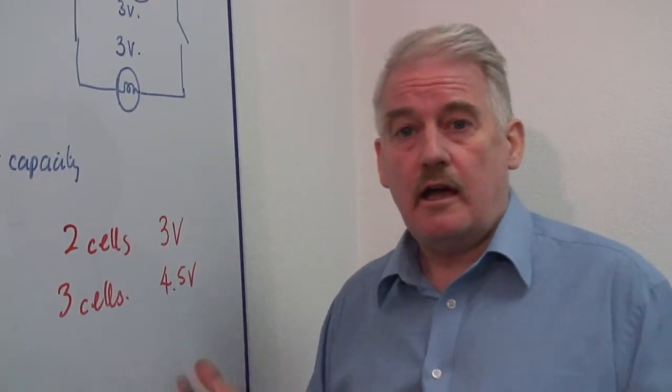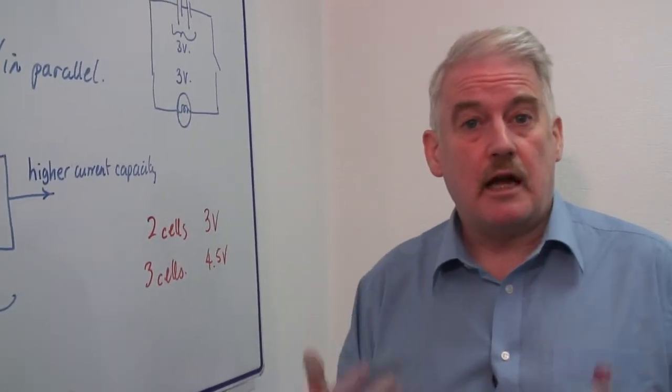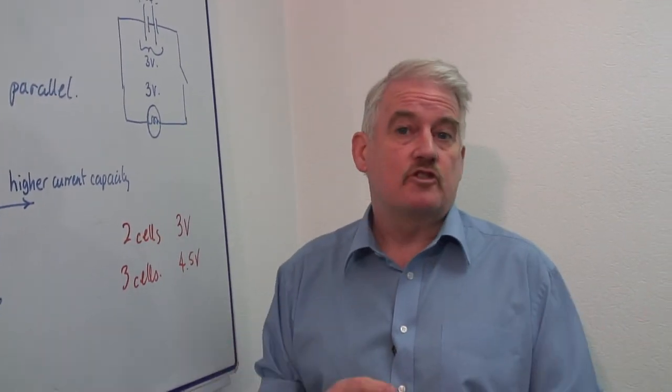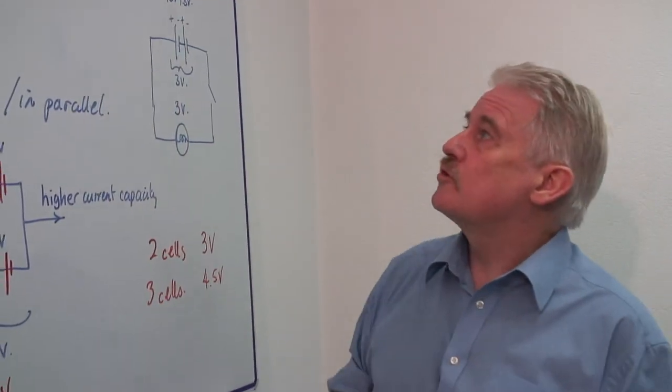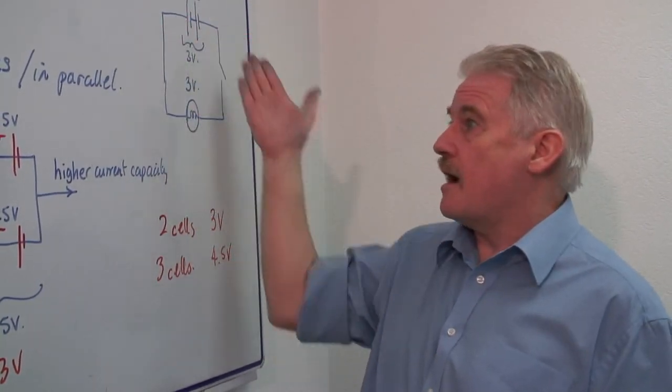Obviously, the higher the voltage and the higher the current capacity, the brighter the bulb, the brighter the torch. So that is basically how to build a circuit using a battery.